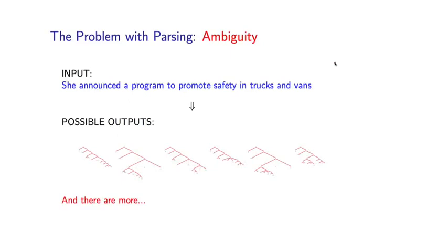Let's illustrate this issue of ambiguity with the following sentence, which is quite short and rather innocuous looking: She announced a program to promote safety in trucks and vans. To a human, there's really only one plausible interpretation of the sentence. It's really not ambiguous.